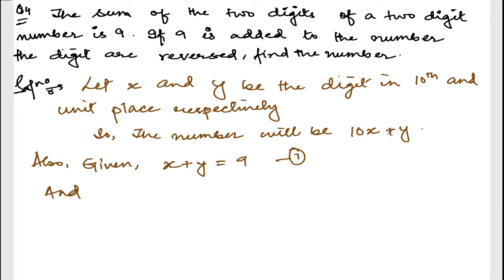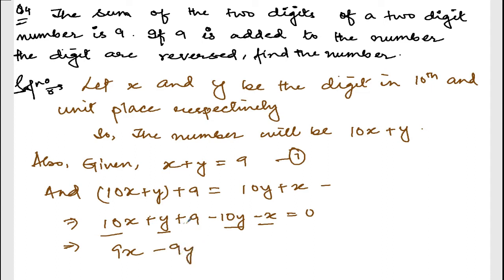If you add 9 to this number, that is 10x plus y plus 9, it will get reversed. That is, it will become 10y plus x. Instead of x it will become y, and instead of y it will become x. Let me calculate this one: 10x plus y plus 9, minus 10y minus x equals 0. 10x minus x is 9x, plus y minus 10y is minus 9y, and plus 9. Transfer this side, it will be minus 9.